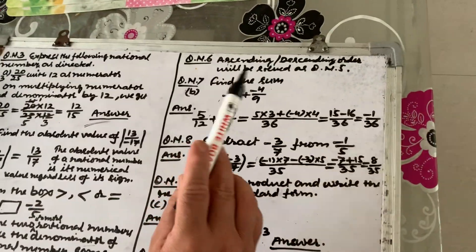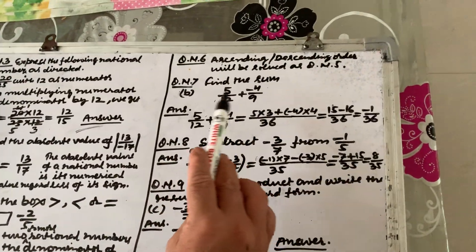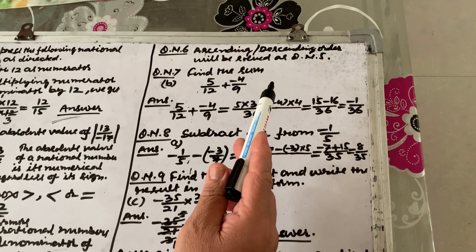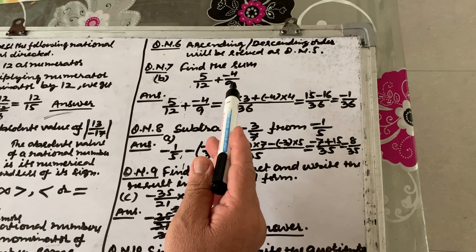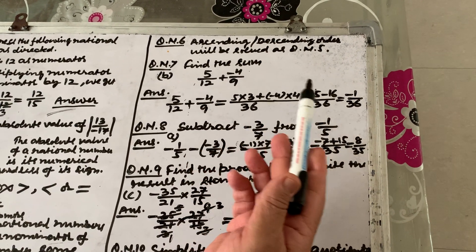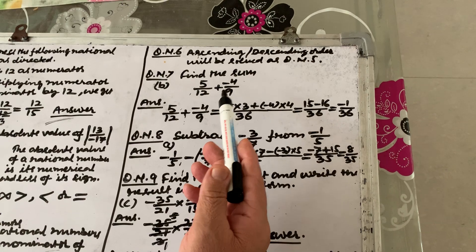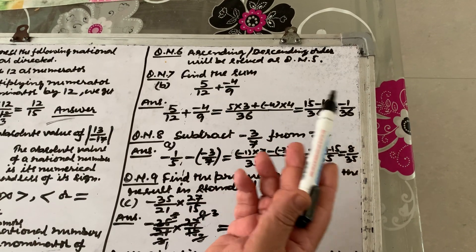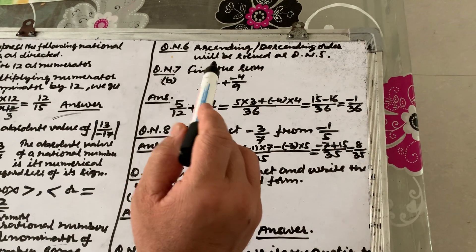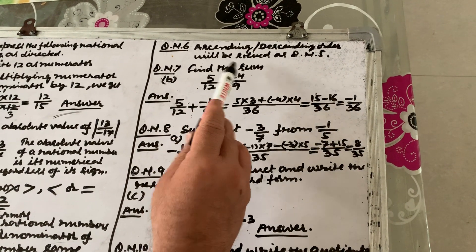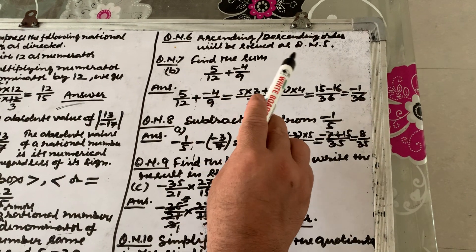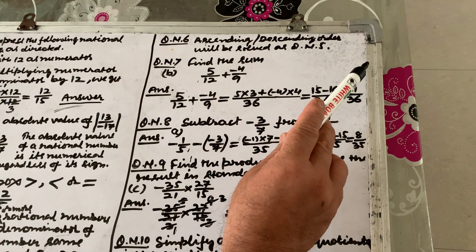Question number 6 involves arranging fractions in ascending or descending order. It is solved using the same method as question number 5 — finding LCM and comparing. You should solve this question on your own.